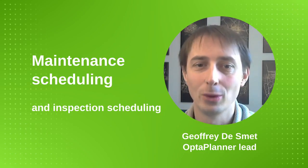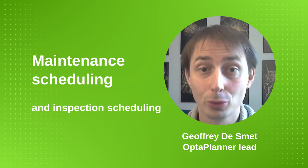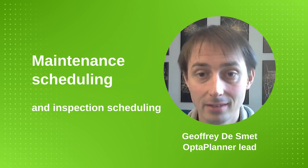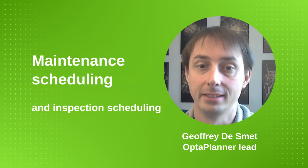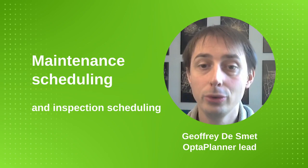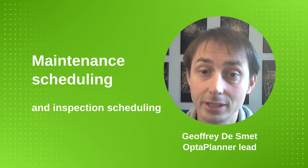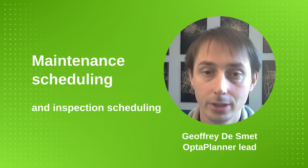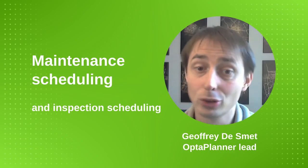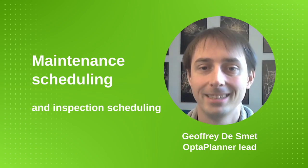Hello! Don't you just hate it when you're driving and you run into road maintenance, you have to take a detour and that also runs into other road maintenance? Today I'm going to show you how to automate and optimize maintenance scheduling with OptaPlanner, an open source AI constraint solver. You can use this to plan better maintenance of roads, railroads, electricity grids, buildings, vehicles, elevators and any other type of machinery. And with a few changes it also works for inspection planning, for example for bridges or schools. Let's get started!